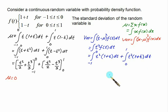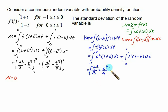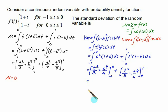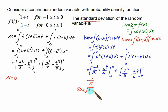Expanding and integrating: t³/3 + t⁴/4 from −1 to 0, plus t³/3 − t⁴/4 from 0 to 1. Substituting the limits gives a variance of 1/6. Therefore, the standard deviation equals the square root of 1/6.